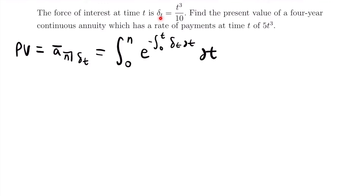The force of interest delta_t equals t³ divided by 10, and we have a four-year continuous annuity so n equals 4. The rate of payments at time t is 5t³, so X equals 5t³. To include X in the formula, we multiply it by the e term inside the integral, since that term is the present value factor. So 5t³ will be inside the integral, multiplied by that present value factor.